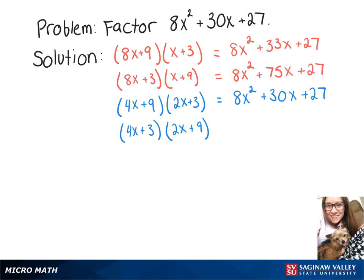So it looks like that's going to be the one, but let's try the next one anyway just to see what we get. So when we FOIL that out, we get 8x squared plus 42x plus 27.